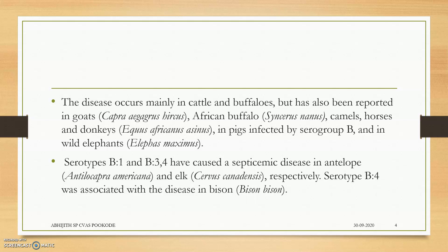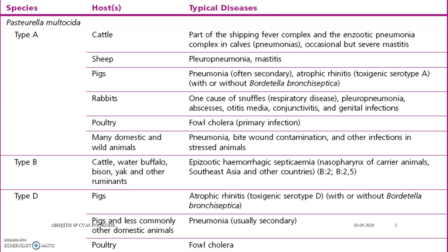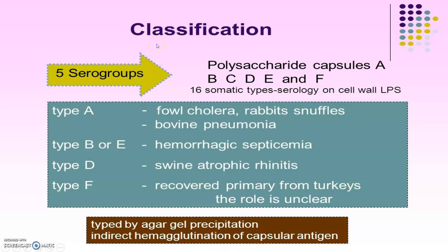Serotypes B1, B3, and B4 have caused septicemic disease in antelopes and elves, and serotype B4 was associated with disease in bison. To summarize the classification chart: Pasteurella multocida type B in cattle, water buffalo, bison, and yak causes episodic hemorrhagic septicemia, with B2 being the main strain. Type A causes fowl cholera in poultry as a primary infection, while type B also causes fowl cholera in poultry. You can see more on the full classification in the Pasteurella video.